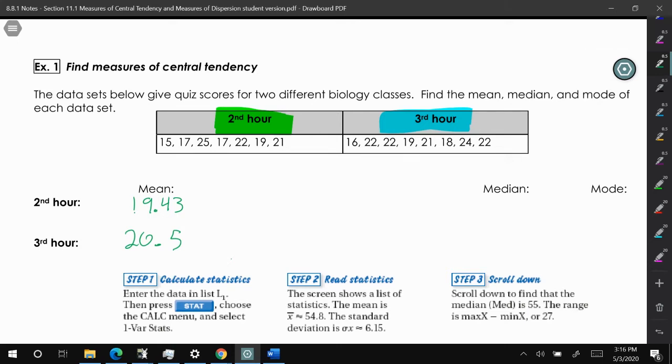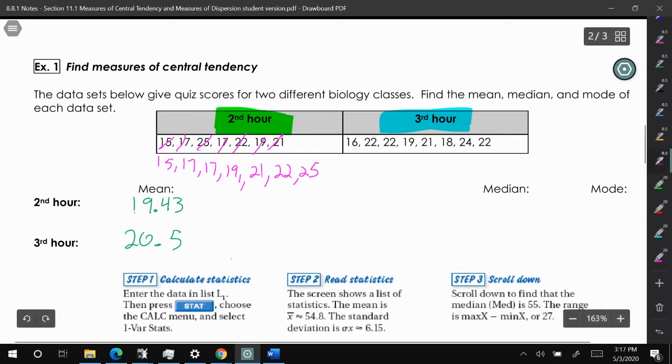Now to calculate the median, we have to make sure the numbers are in order. I'm going to do that for second and third hours. I'm going to put the numbers in order. I like to cross them off as I write them down so I remember that I've gotten them all. With a list of numbers like this, it's very easy to miss a number, and if you miss a number and you're writing them in order, that's going to mess up the rest of the problem.